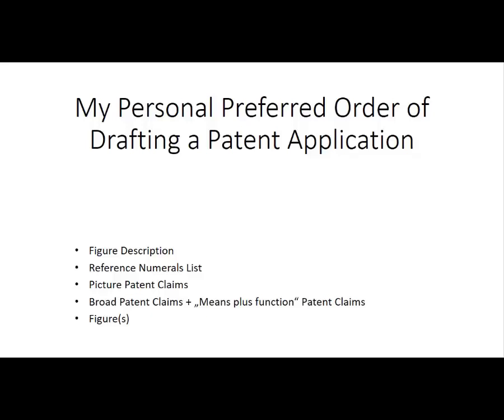Starting from the picture patent claims I can draft the broad patent claims and means plus function patent claims. This gives broad protection for the patent if it is granted, because the patent claims define what is protected. After that I would draft the abstract part, which is nothing else than a patent claim put into proper wording. And I draft the introduction or the starting point. Usually then I do the support section which describes the abstract solution of the problem in the wording of the patent claims.